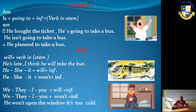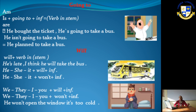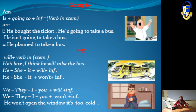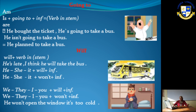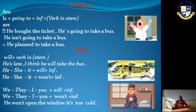'He's late — I think he will take the bus.' With 'will,' all subjects (he, she, it, they, I, you) are followed by 'will' plus the verb stem. For example: 'He won't open the window — it's too cold,' as shown in the picture.